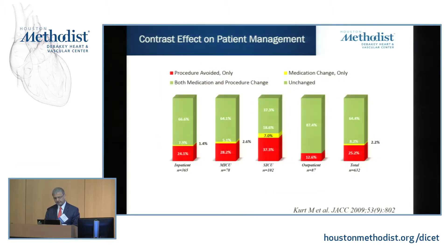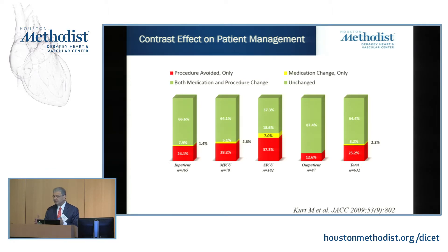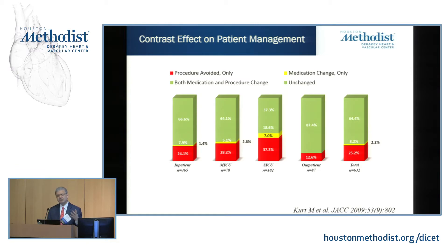Overall in this cohort, if you take a look at the surgical intensive care unit, the impact is almost 50% — 46% — of either a change in something, either avoidance of a procedure or changes in medication. The outpatient impact is about 13%. Our utilization of contrast in the inpatient setting is about 15% of total volume, highest in the surgical ICU. In the outpatient setting it's between 6% and 7%.